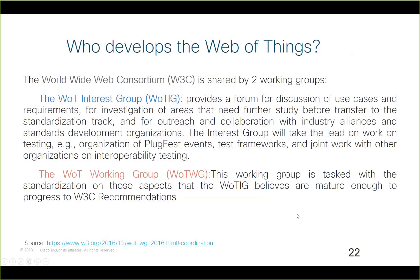The two W3C groups are: first, the Web of Things Interest Group, where use cases and requirements are discussed, working with other industry alliances, standards development organizations, and organizing plugfest events and joint works. When use cases and requirements are mature, they go to the working group. The Web of Things Working Group standardizes those concepts and produces the W3C recommendation.